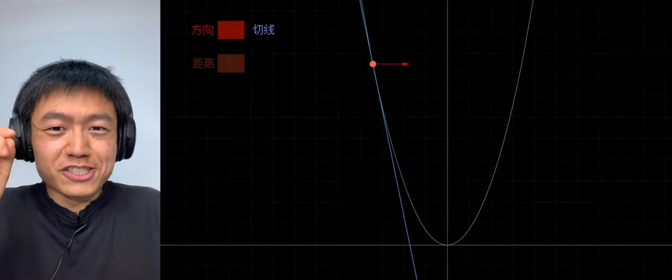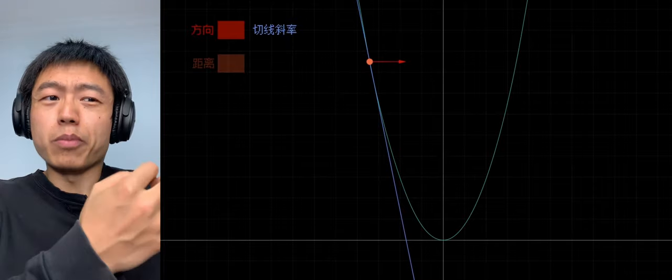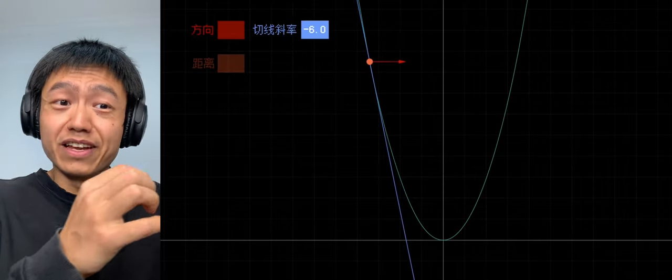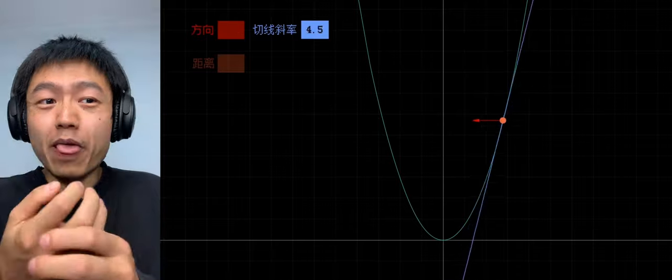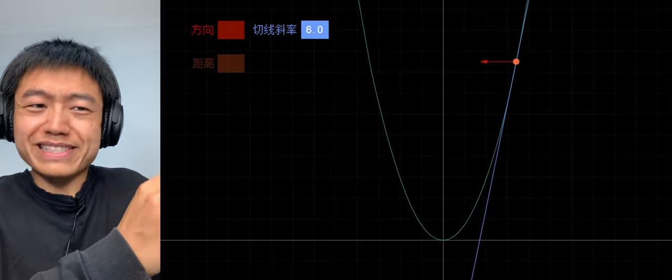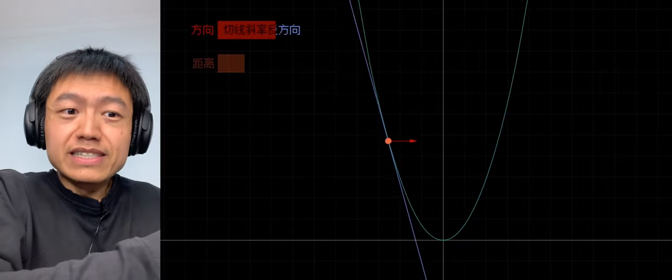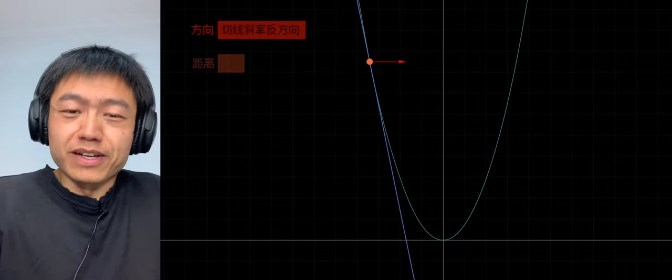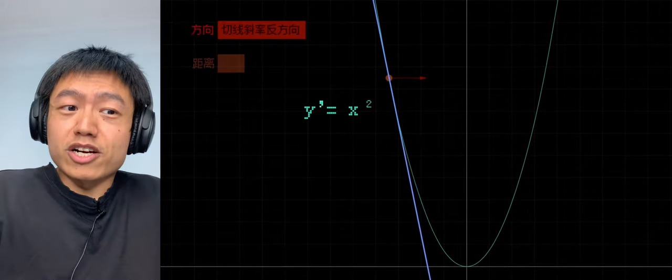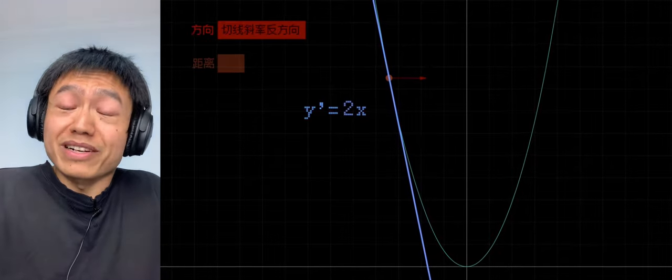The direction problem is easy to solve. Just draw a tangent. If the tangent slope of the current point is negative, then we should make x larger and go to the right. If the tangent slope is positive, we should make x smaller and go left. The value of the tangent slope can be calculated from the derivative of current curve y' equals 2x.